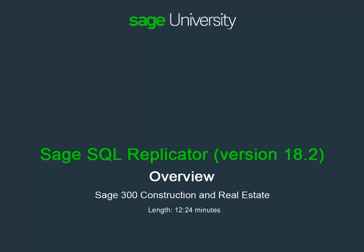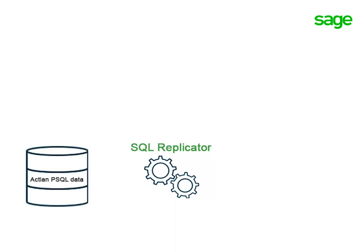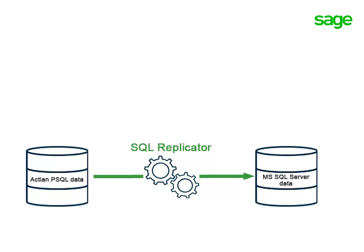What is Sage SQL Replicator and how does it benefit you? This video describes the 18.2 version of this tool and will examine how to install, configure, and use SQL Replicator. Sage SQL Replicator is a tool that copies your Sage 300 Construction and Real Estate data from the Pervasive data management system into a SQL Server database. The replicated data includes your purchasing, inventory, and service management data if you use those products.